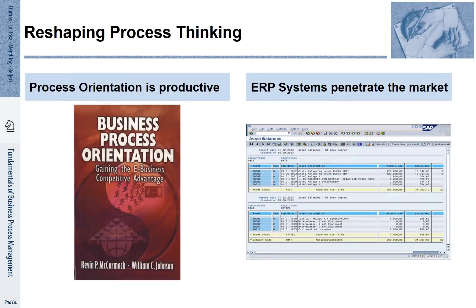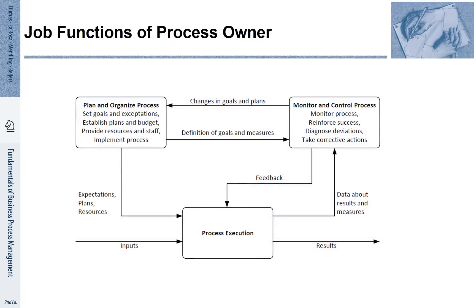Eventually, around the year 2000, things were changing for the better. People had understood that process orientation was actually very productive — the book by McCormick and Johnson nicely illustrates this. Furthermore, there were innovations on the IT side. ERP systems had become so mature that they were able to support entire business processes from start to end, which was very important and effective for supporting redesigned business processes. Around that time, it also became clear that it was not only about IT and the process — there was a need for a new role overseeing the process, called the process owner.